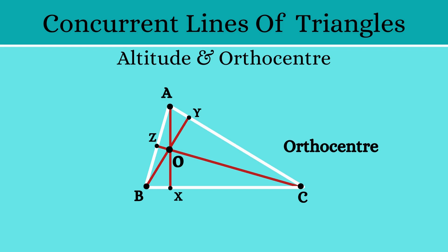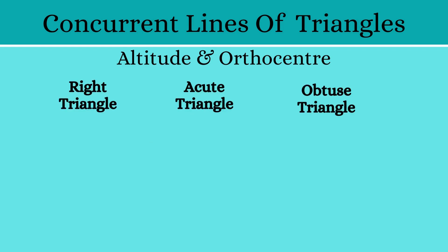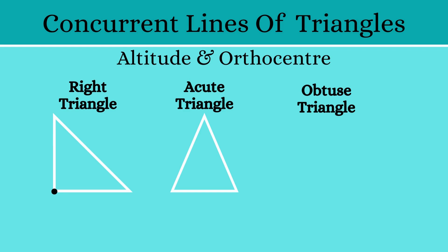Just like the incenter, the position of the orthocenter also varies according to the type of triangle. In a right-angled triangle, the orthocenter will always be at the vertex of the right angle. In an acute-angled triangle, the orthocenter will be inside the triangle. And in an obtuse-angled triangle, the orthocenter will be outside the triangle.